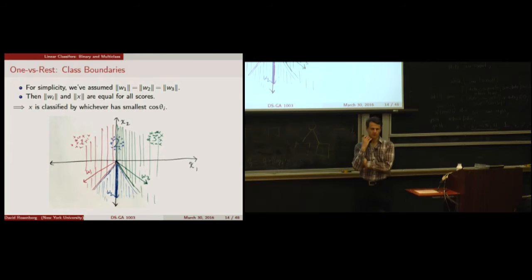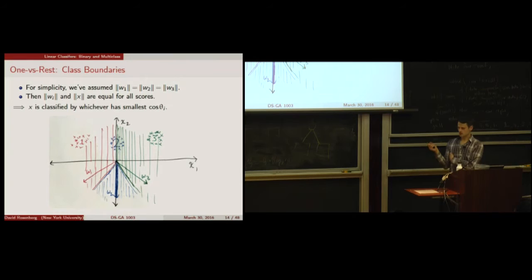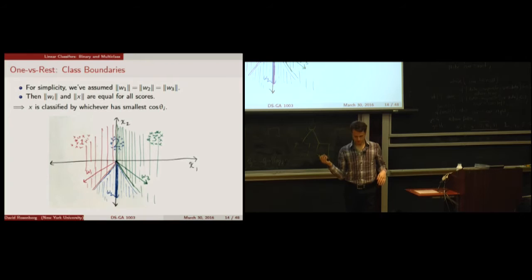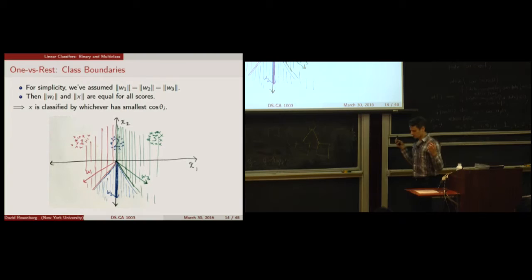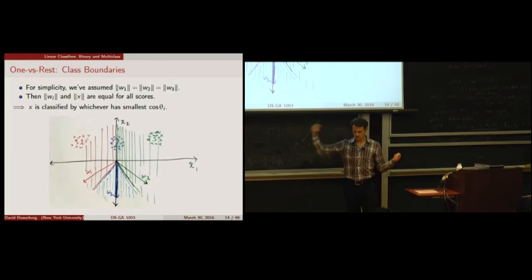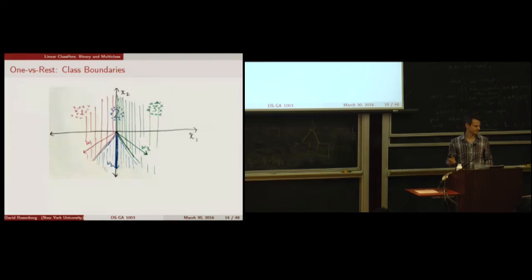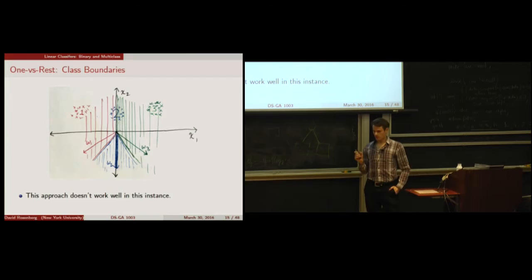This can be thought of as an instance of a decision function outputting three levels — red, green, and blue, or one, two, or three. The input space is the plane X. This is an instance of a prediction function from our multi-class hypothesis space. This approach didn't work well for the example though — it's completely getting class two wrong.